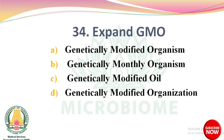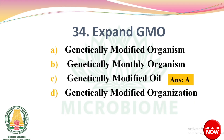Next question: Expand GMO — options: genetically modified organism, genetically monthly organism, genetically modified oil, genetically modified organization. The right answer is option A: genetically modified organism.